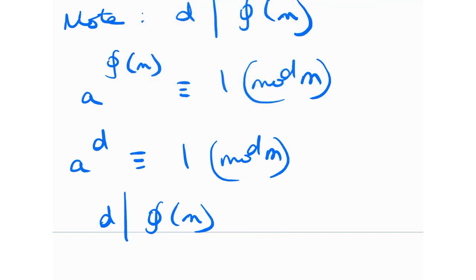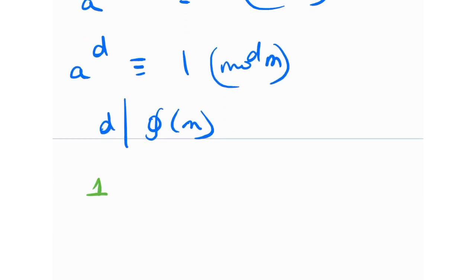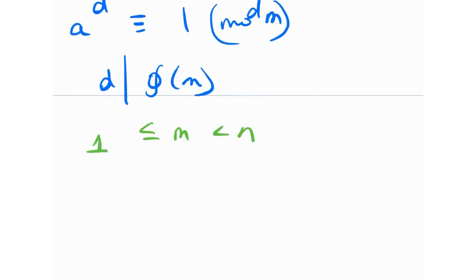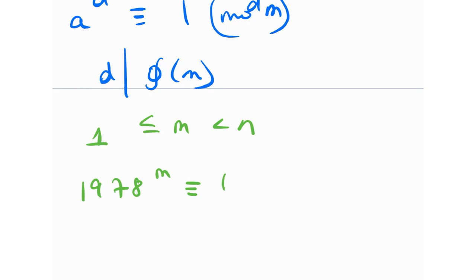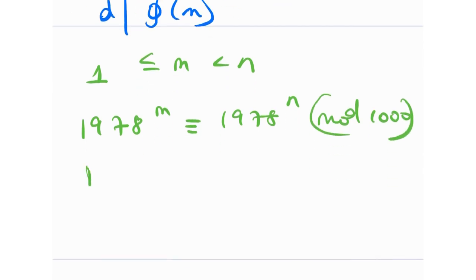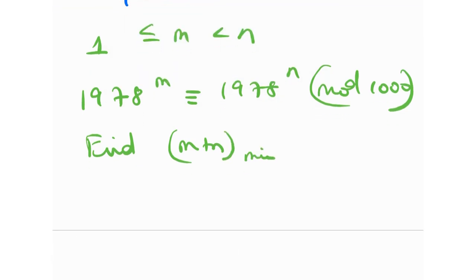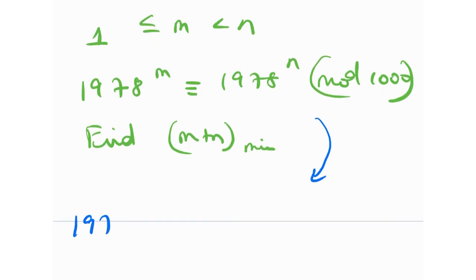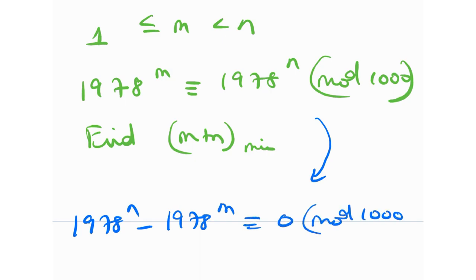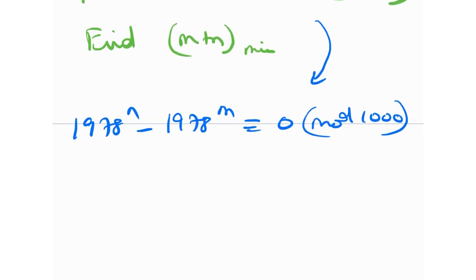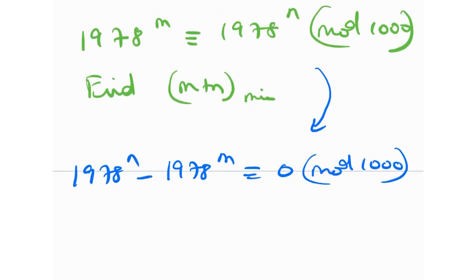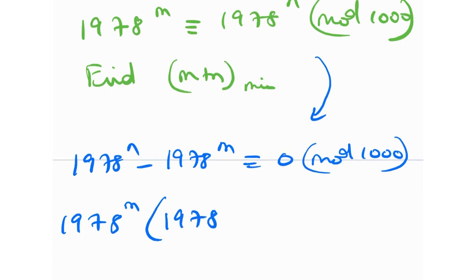Now let's come to the problem. We have the condition 1 ≤ m < n, and 1978^m ≡ 1978^n (mod 1000). We need to find the minimum value of m + n. Rewriting, this means 1978^n − 1978^m ≡ 0 (mod 1000). Since n > m, taking 1978^m as a common factor gives: 1978^m · (1978^(n−m) − 1) ≡ 0 (mod 1000).